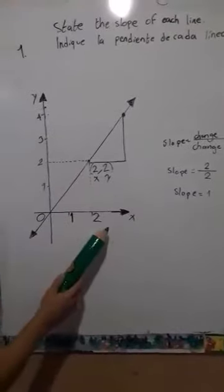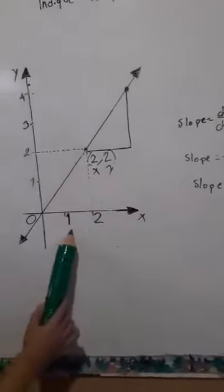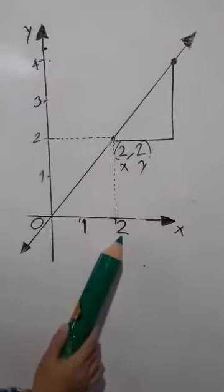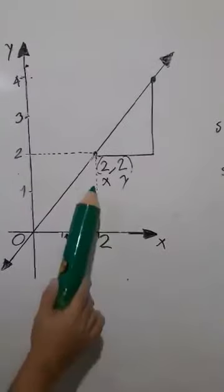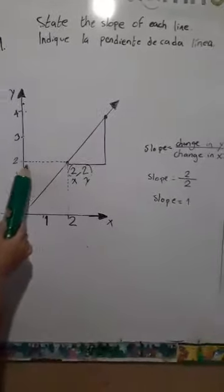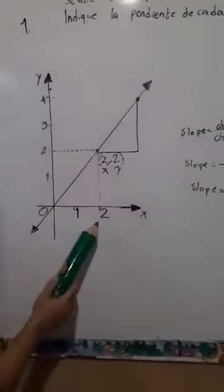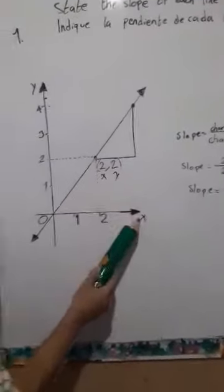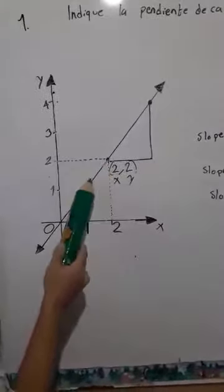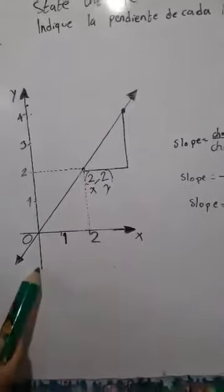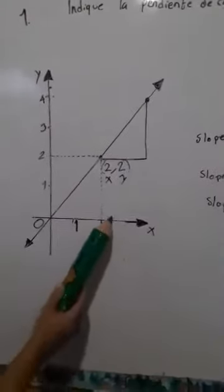It sets or establishes a relationship between, for example, in here, the number 2 is in a relationship with the number 2. The number 2 of the x is related to the number 2 of the y. That is a relationship.